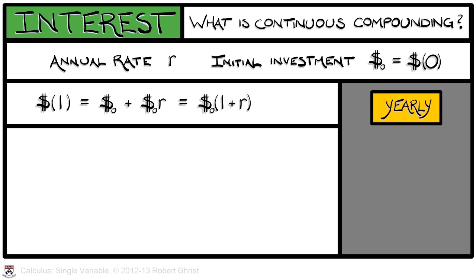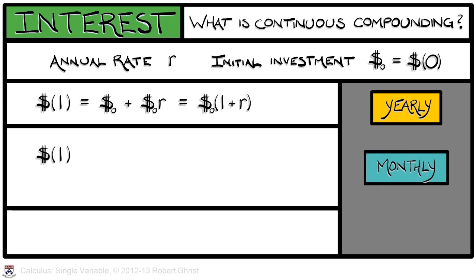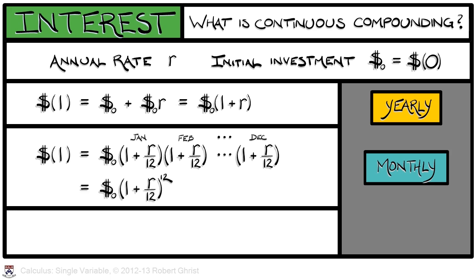We could write that as the initial investment times quantity one plus r. If, however, we compounded that interest monthly, then what would we get? After one year, we would have the initial investment times quantity one plus r over twelve, which is how much we would earn in January. Then we would multiply all of that by quantity one plus r over twelve. At the end of February, we would continue on until the end of the year, giving another factor of one plus r over twelve. That means at the end of the year, we would have the initial investment times quantity one plus r over twelve to the twelfth power. That's actually a little bit more than we would get from an annual compounding.